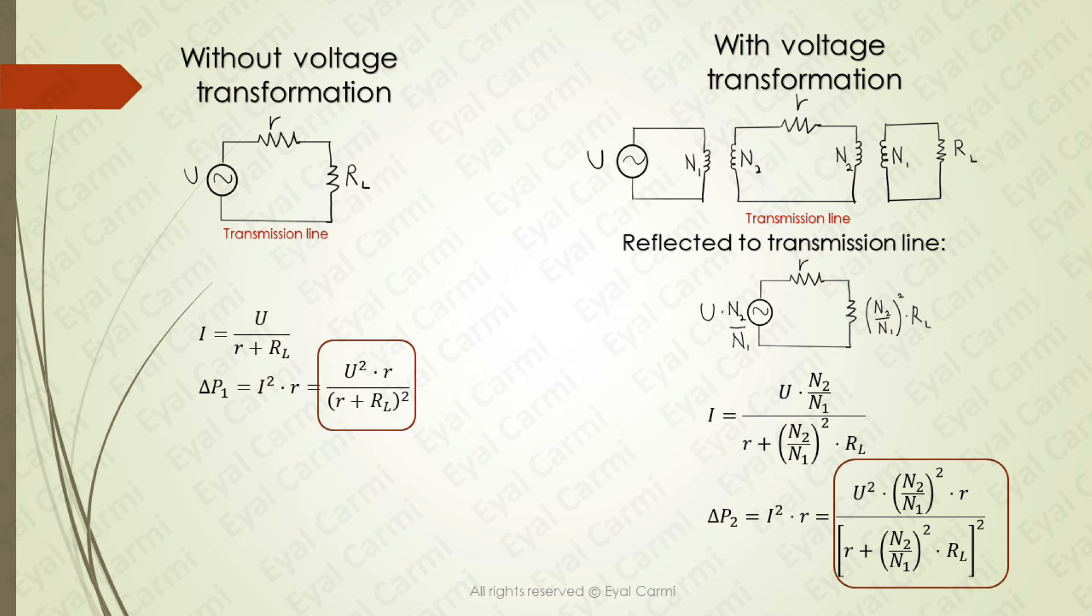Therefore, the current I equals, in the numerator, U times N2 divided by N1, and in the denominator, R plus N2 divided by N1 squared times RL.